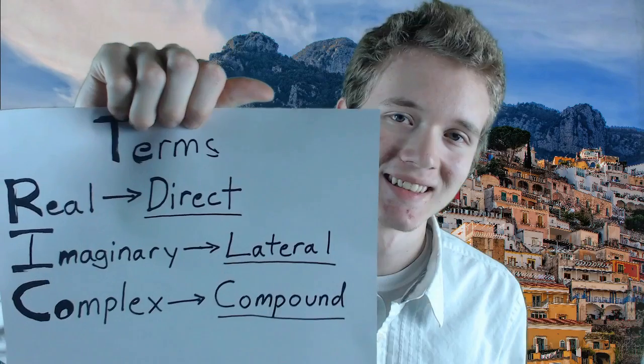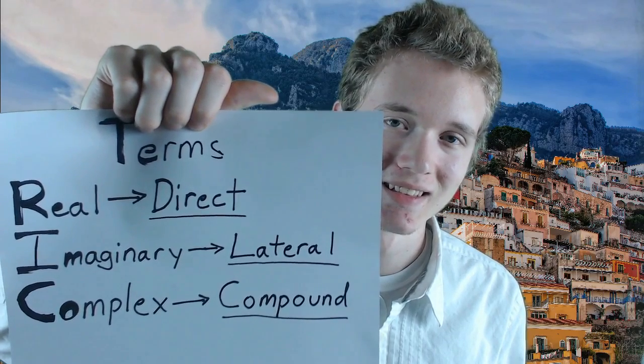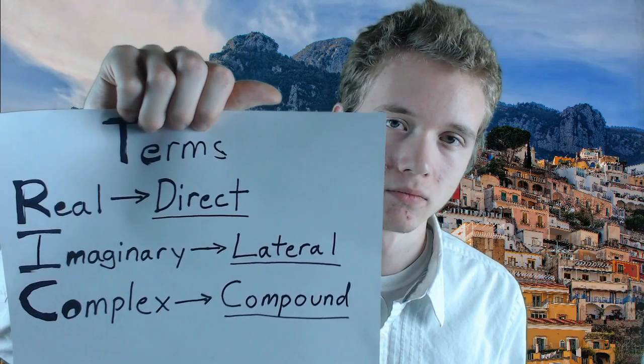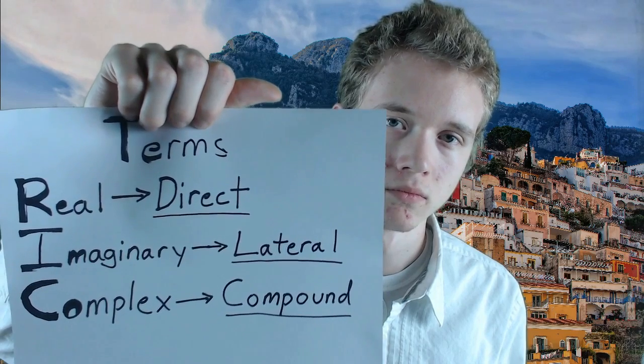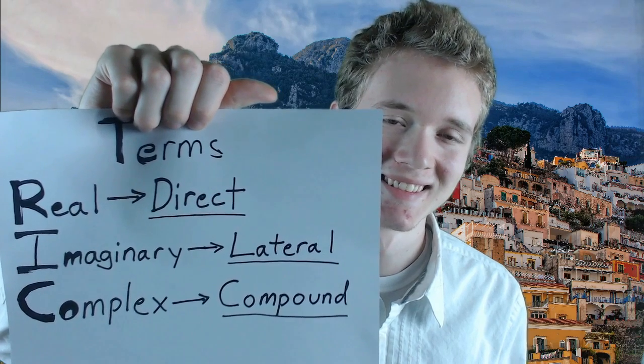These terms are real numbers, imaginary numbers, and complex numbers. There are better words we can use to describe these numbers. Direct numbers describe a straight line. Lateral numbers describe numbers to either side of the number line. And compound numbers describe the combination of direct and lateral numbers.